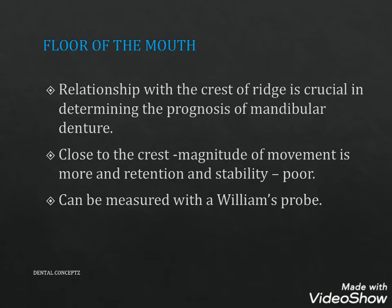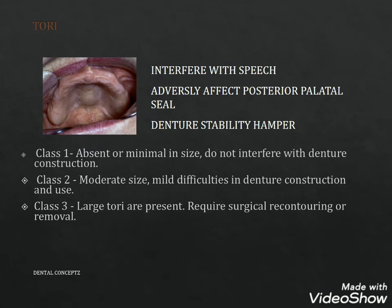The floor of the mouth relationship with the crest of the ridge is crucial in determining the prognosis of the mandibular denture. If the floor of the mouth is close to the crest, the magnitude of movement is more and retention and stability are poor. It can be measured with the Williams Probe. A high floor of the mouth interferes with speech, adversely affects the posterior palatal seal, and results in hampered stability. For tori: Class 1 — absent or minimal, does not interfere with denture construction. Class 2 — moderate size, causes mild difficulties. Class 3 — large tori requiring surgical recontouring or removal.